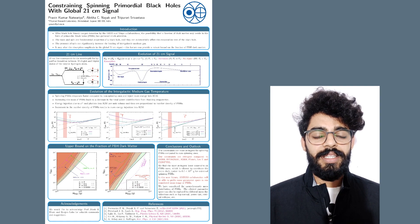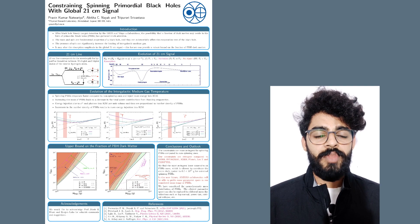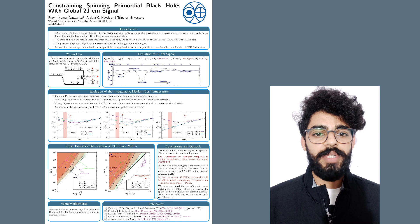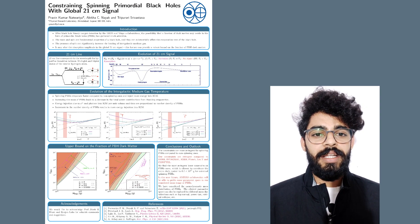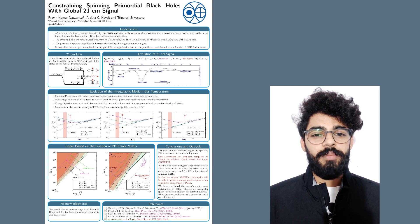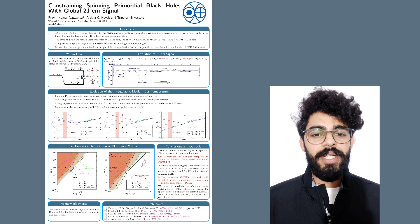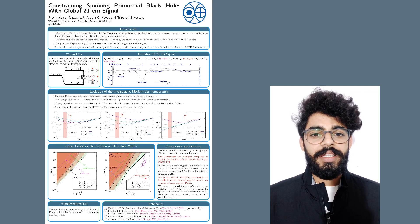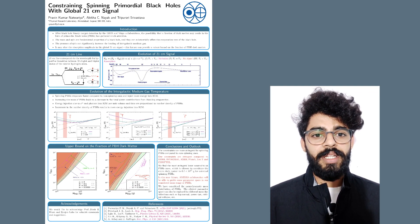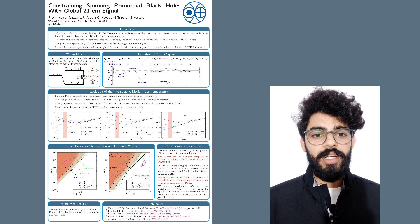We study the upper bound on the dark matter fraction in the form of primordial black holes with a non-zero spin by using the absorption feature in the global 21 cm signal at redshift 17. The mass and spin are fundamental properties of a black hole, and they can substantially affect the evaporation rate of the black hole.